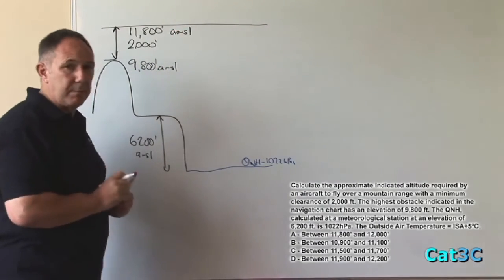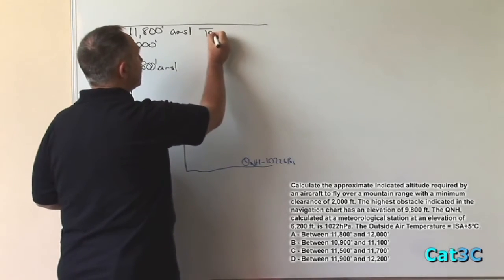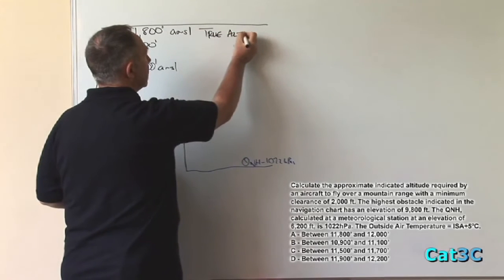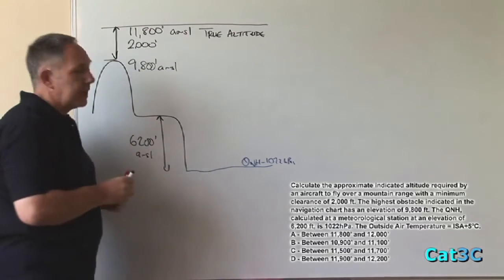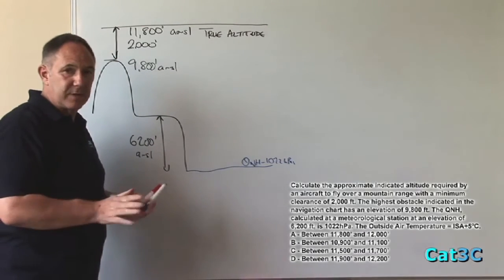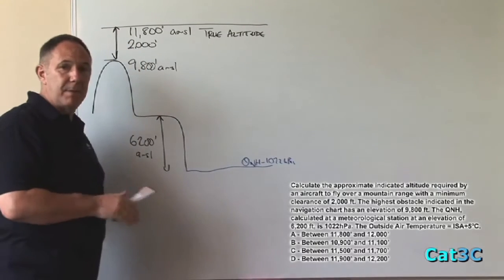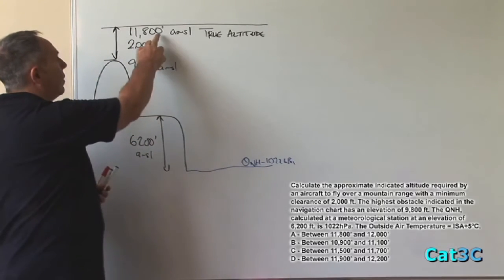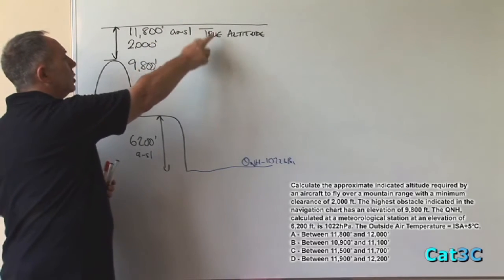But what we must remember is that this is a true altitude. This is an absolute altitude. The mountain will be 9,800 feet high regardless of any change in temperature or pressure and the 2,000 feet is a minimum absolute clearance. Therefore, the minimum altitude must be 11,800 feet true altitude.